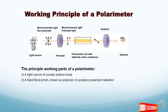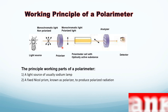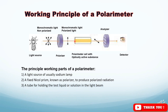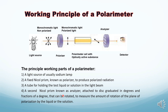This plane polarized light passes through a tube which is used for holding the test liquid or solution in the light beam. This tube may be empty or it may contain the solution of the substance to be tested. Then we have a second nickel prism known as the analyzer, which is attached to a disk graduated in degrees and fractions of a degree.